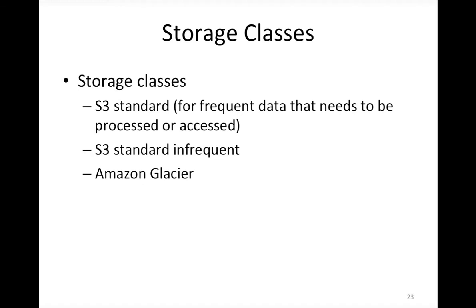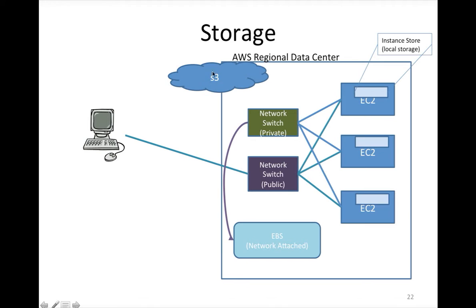There are three storage classes. S3 Standard is for data that needs to be frequently processed or accessed. S3 Standard Infrequent Access is for data that doesn't need to be accessed that frequently. The third is Amazon Glacier — for cold backups where it's acceptable to wait two to three hours to restore data. Glacier is very, very cheap storage.